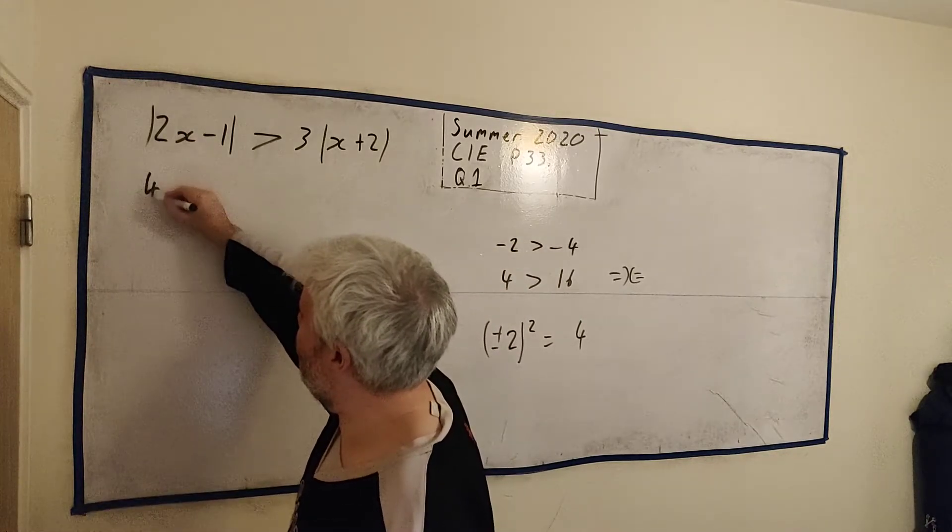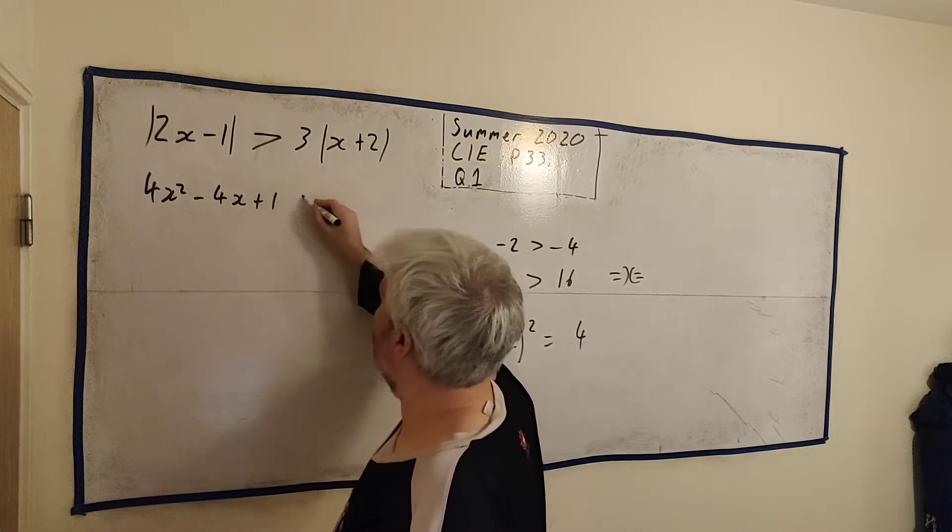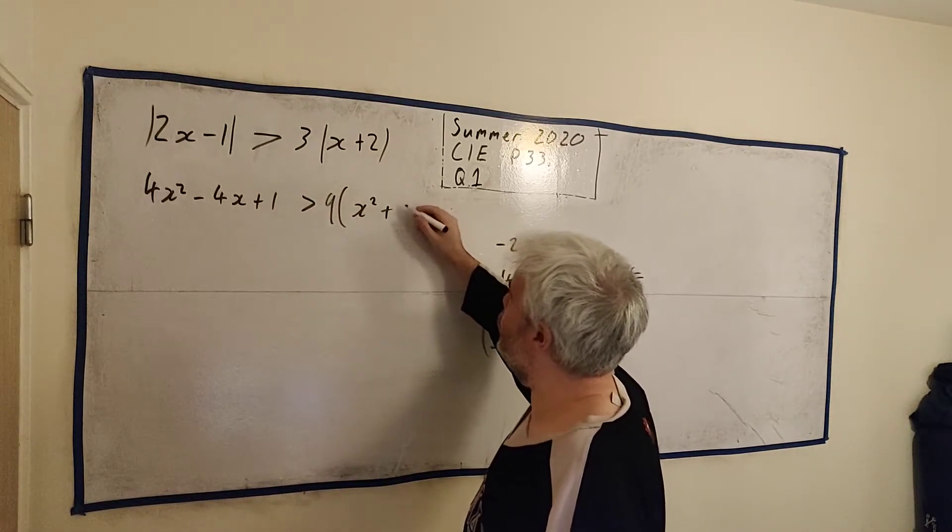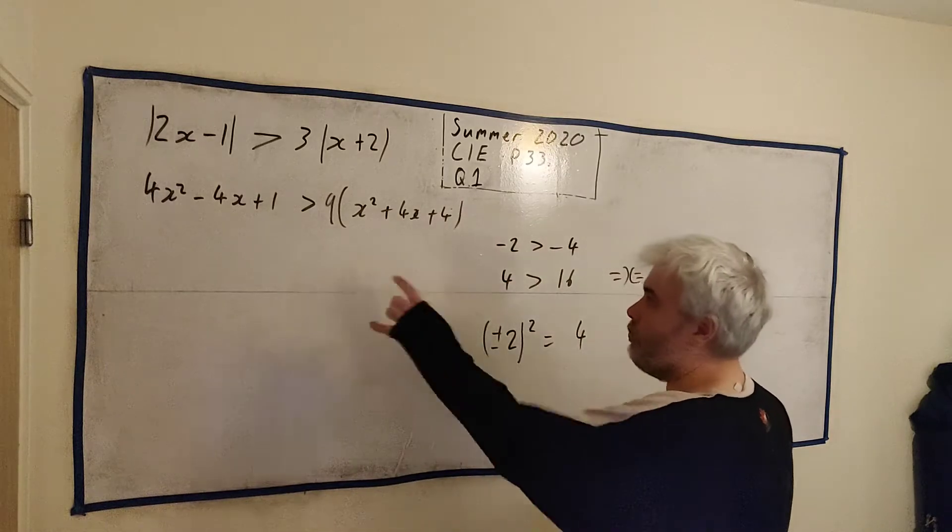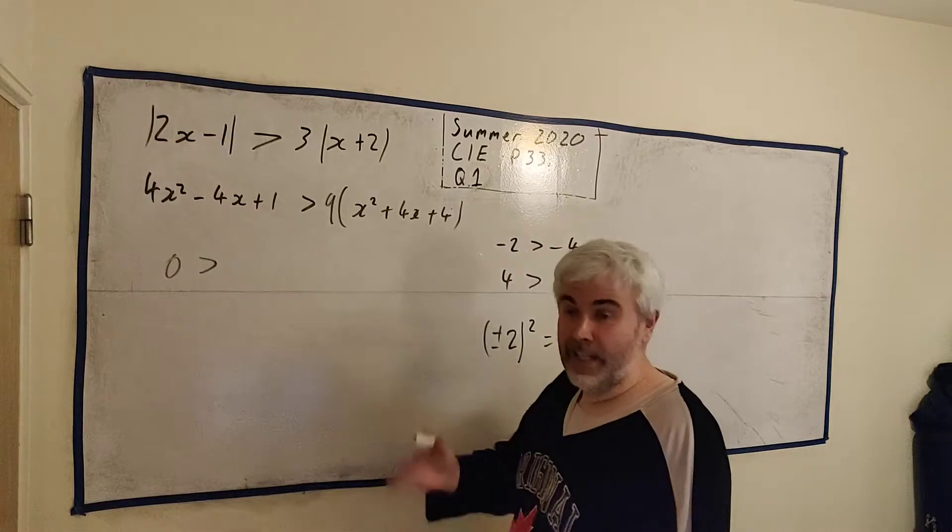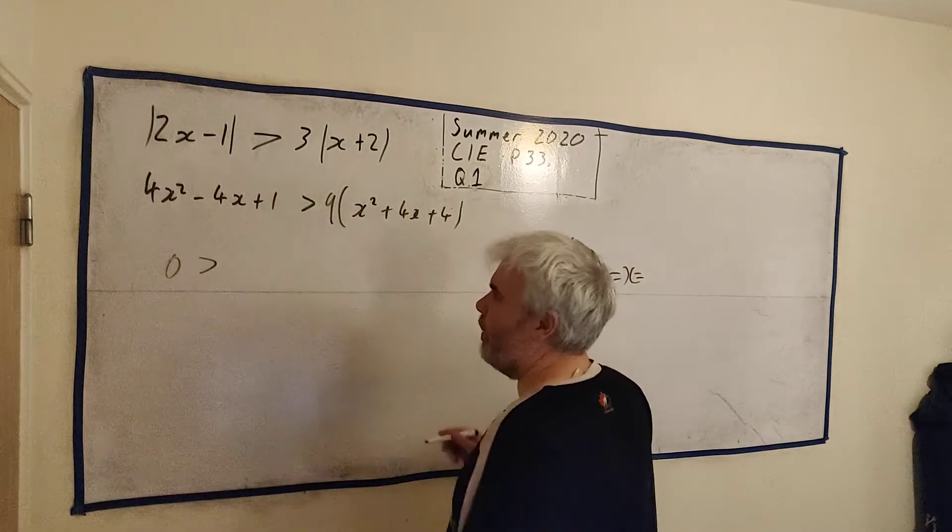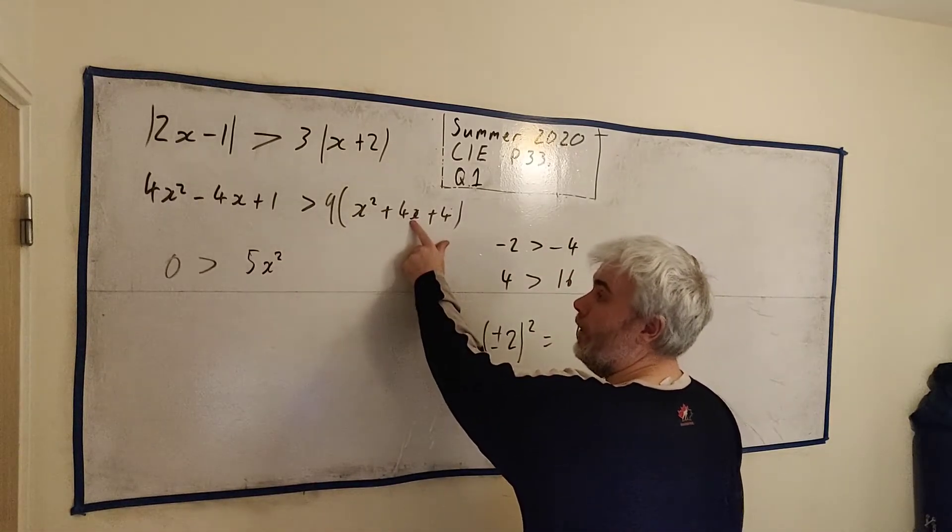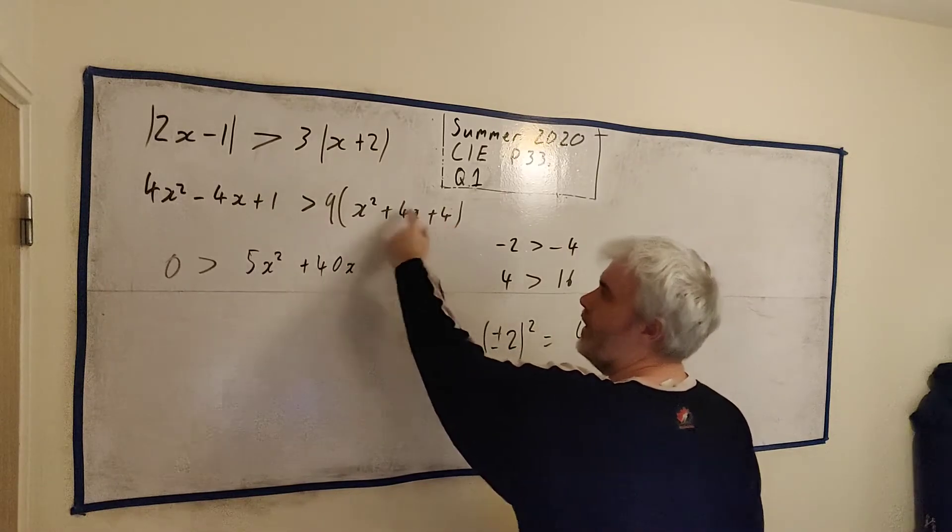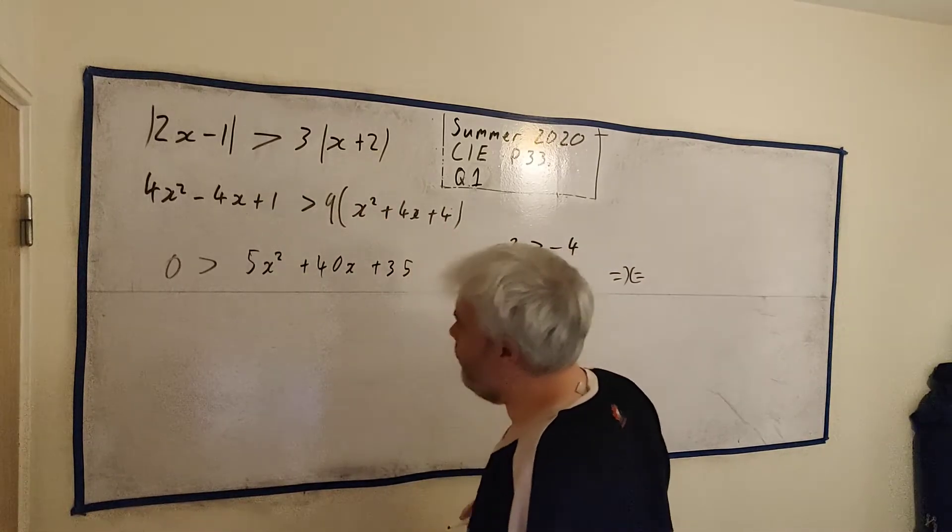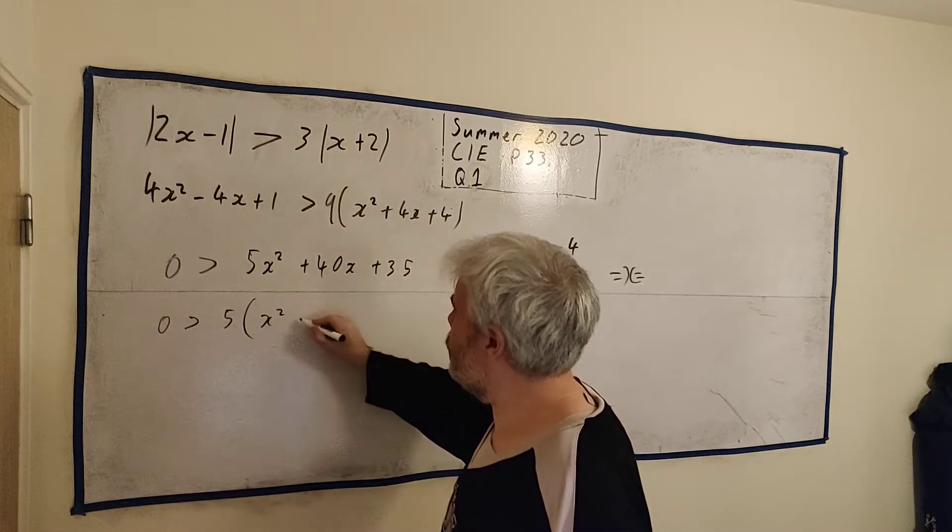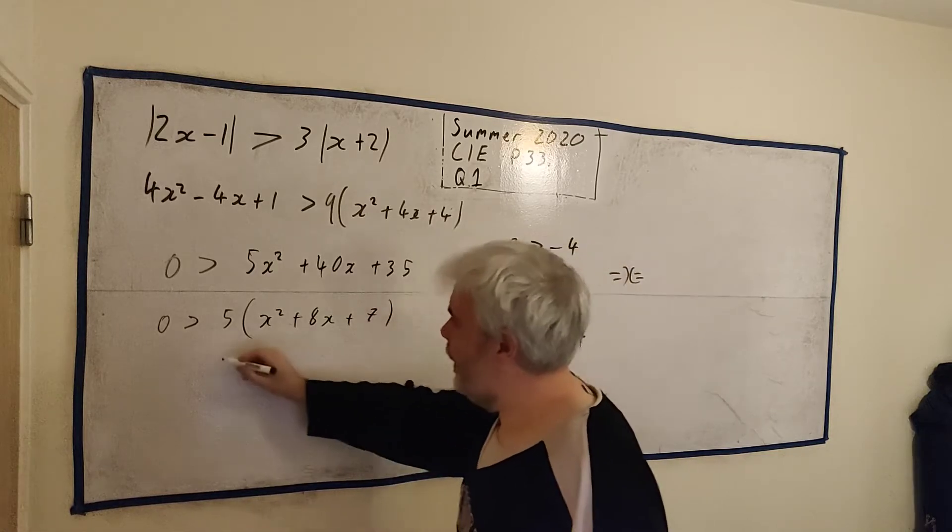Alright, so if we square both sides, we'll get 4x squared minus 4x plus 1. This will be 9 multiplied by x squared plus 4x plus 4. And let's rearrange all that and get all the x's, everything on the left, I guess. Leave 0 over here. We have 9x squared on this side. Take away 4x squared, 5x squared. 36 plus another 4 is 40x. And we have 36 minus 1 is plus 35. 5 goes into all of them. So let's sort that out now. We'll take 5 out. And we're left with x squared plus 8x plus 7. Let's factorize that more.